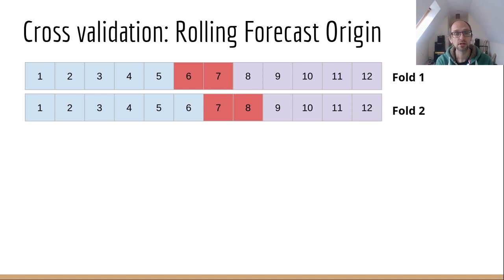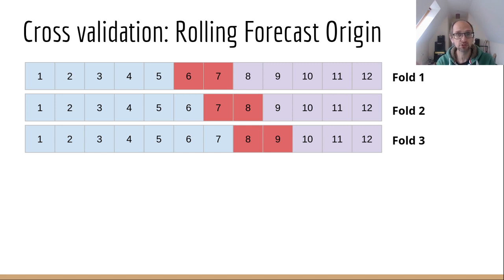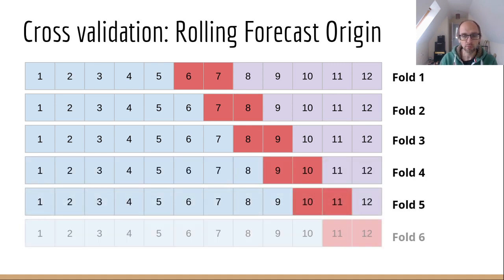Then we run a second fold. This time we roll the forecast origin forward into the future. We now train our model on points 1 through 6, and we predict points 7 and 8. Then points 9 through 12 we hold out and we don't do anything with. So now we've got two data points that we've added to our data set. We run this rolling forecast origin process again, and now we train our model on points 1 through 7 and we predict points 8 and 9. That gives us a third data point.